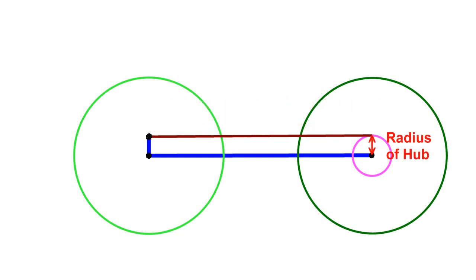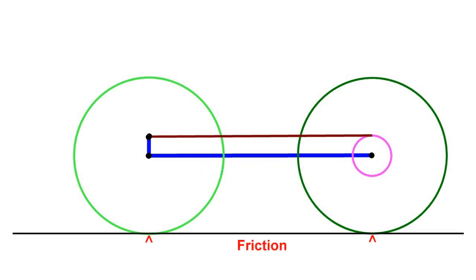Then we've got the friction between the wheel and the ground. Again, that's going to change depending on what sort of wheels you're using. But for the purpose of the maths, we'll assume that's going to be the same in both cases.